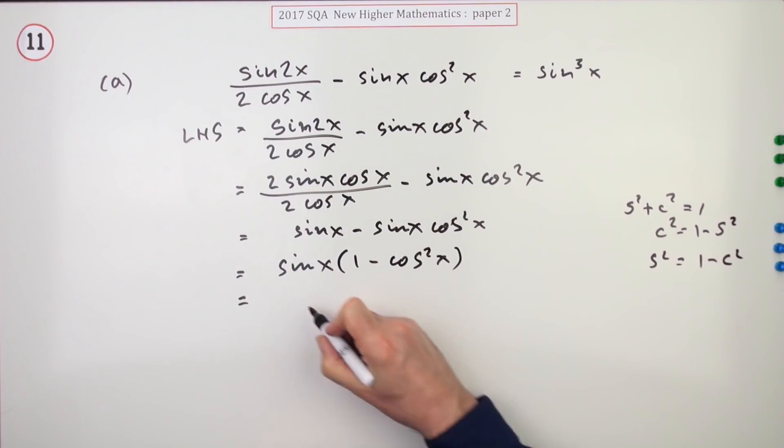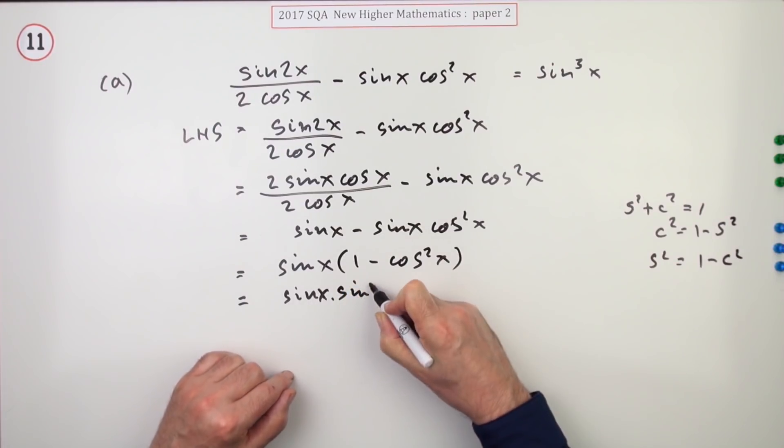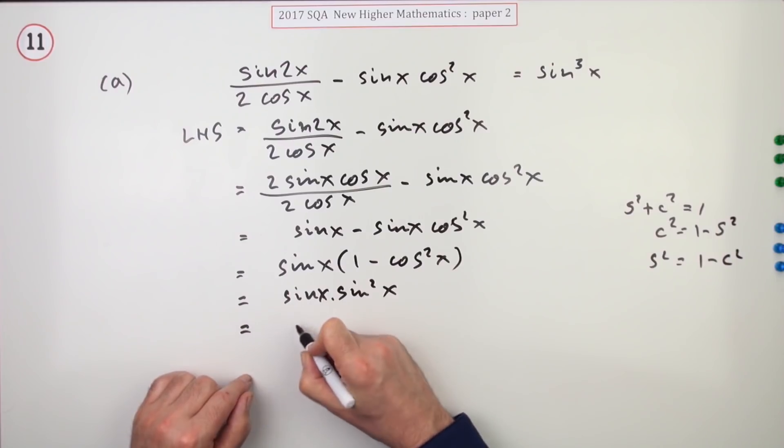So that's just sine x times, where did your x go, times sine squared x. And there you go.